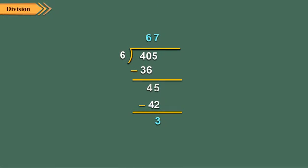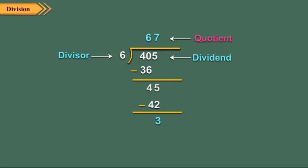In a division sum, the dividend is the number to be divided. The divisor is the number by which we are dividing. The quotient is the answer obtained after division. The remainder is the number which is left over.